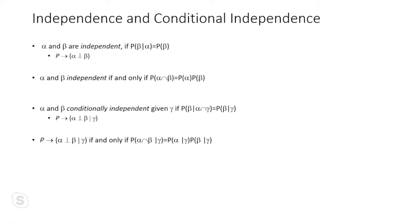Conditional independence: alpha and beta are conditionally independent given gamma if P(β|α, γ) = P(β|γ). In other words, knowing gamma makes alpha irrelevant for predicting beta. Alpha and beta are conditionally independent given gamma if and only if P(α, β|γ) = P(α|γ) · P(β|γ).